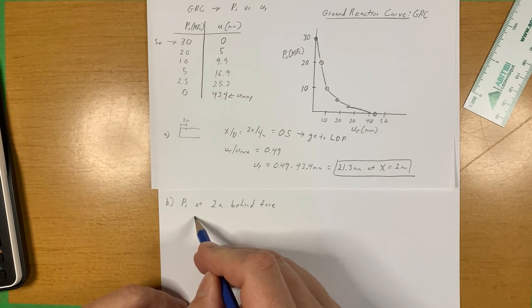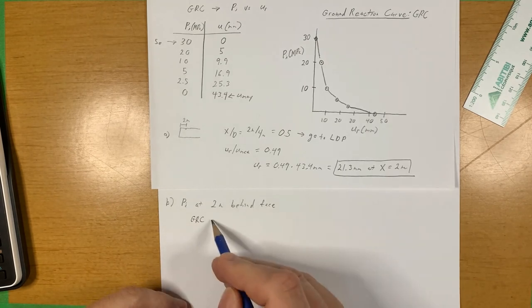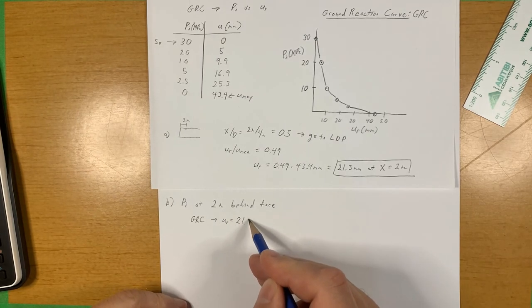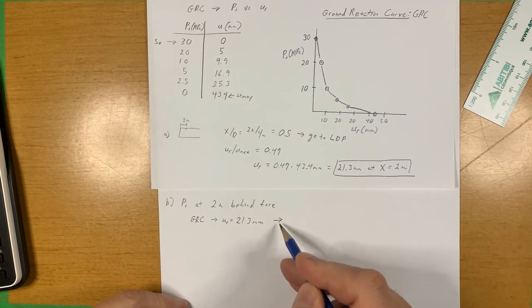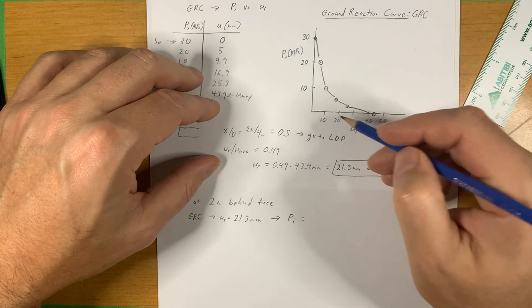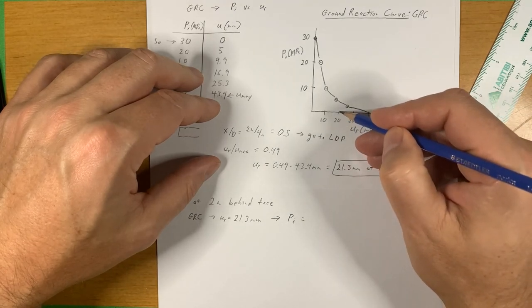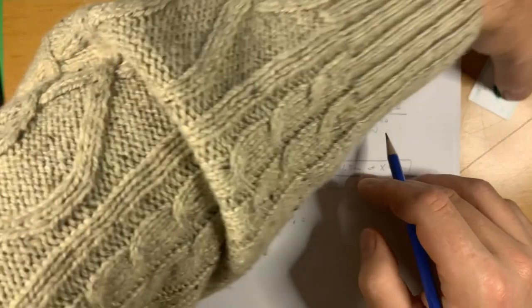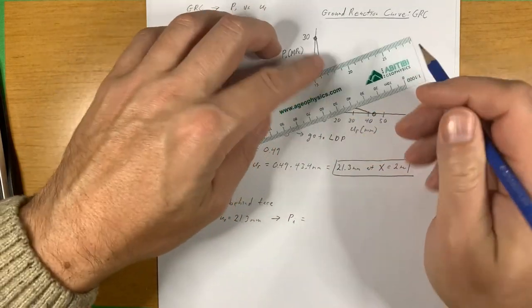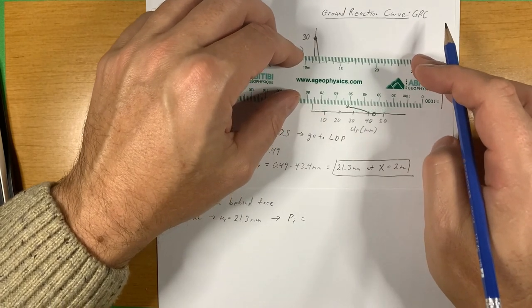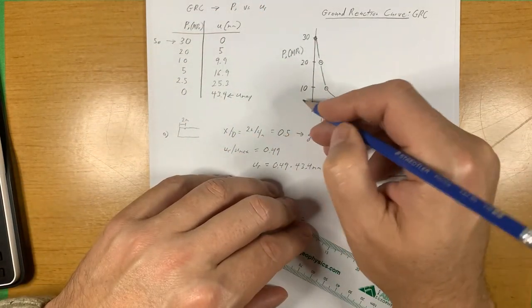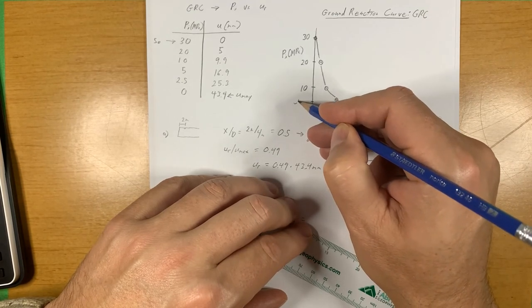We use the longitudinal displacement profile to understand the displacement at that distance. The ground reaction curve gives us the relationship between displacement and P_i. So going to the ground reaction curve with the displacement of 21.3 millimeters, that is going to give us a value of P_i. 21.3 millimeters is about here. This is very crude, but it's just for demonstration purposes.